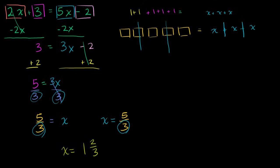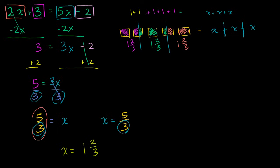Each bucket is 1 and 2 thirds on the left-hand side, or 5 thirds. And on the right-hand side, we just have an x. So when you divide both sides by 3, you get x equals 1 and 2 thirds — it still works, though it's a little harder to visualize with fractions.